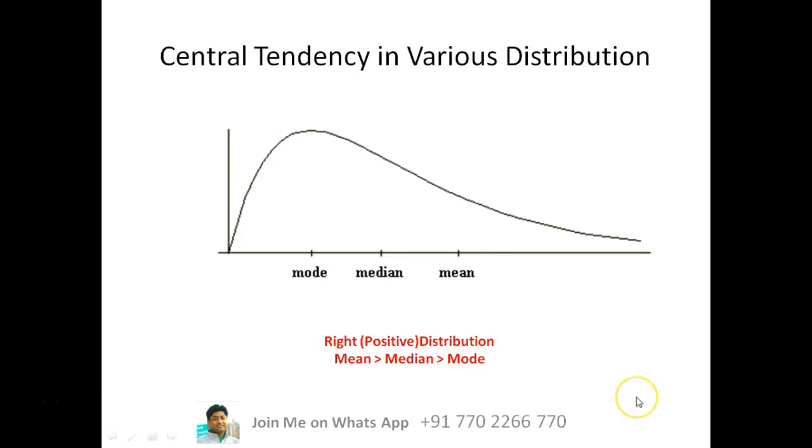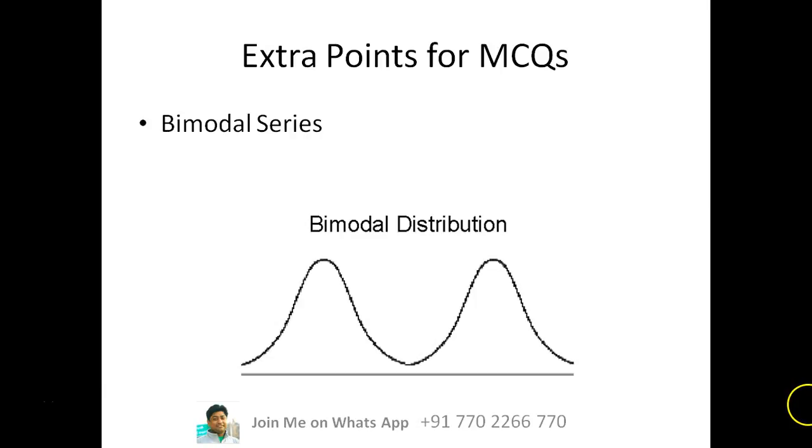So this is frequently asked these days. Now we are going to talk about certain extra points for MCQs. One is bimodal series. Bimodal series is one where you have got two peaks and basically two modes in a particular set of data.